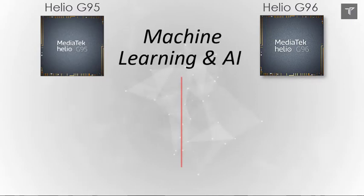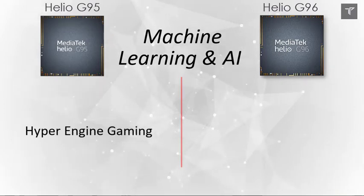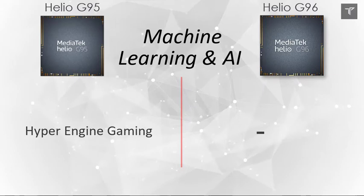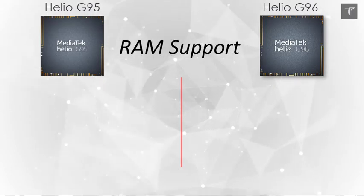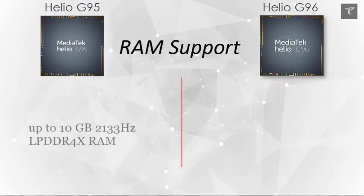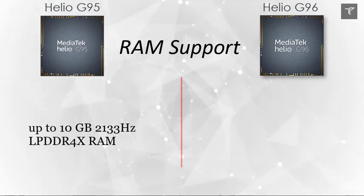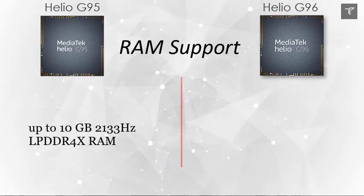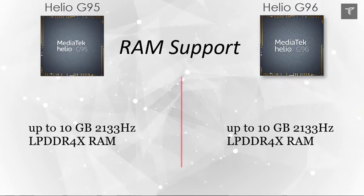On machine learning and AI, the G95 features Hyper Engine gaming support, but this has not been confirmed for the Helio G96. The maximum RAM support on both processors is up to 10 GB of LPDDR4X RAM at 2133 MHz frequency, so you won't be getting 12 GB RAM variants with these processors.